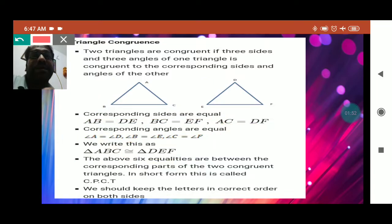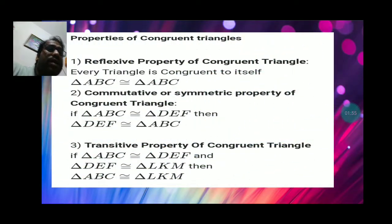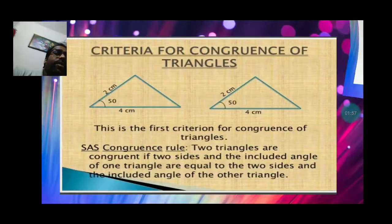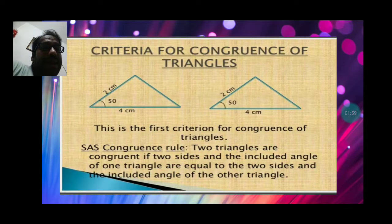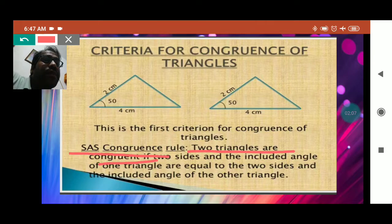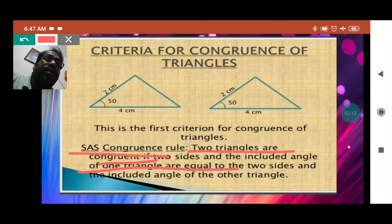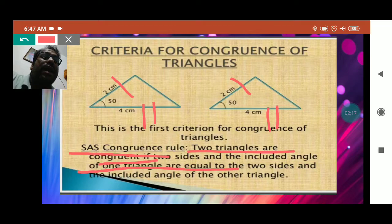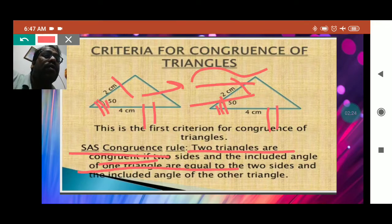There are some criteria used to prove triangles are congruent. One is Side-Angle-Side (SAS). It states that two triangles are congruent if two sides and the included angle are equal in the corresponding triangles. So this is one side, second side, and this is the included angle. If these are equal, the two triangles are congruent. This is one criteria.